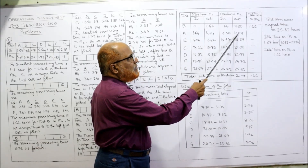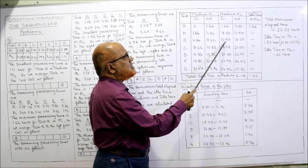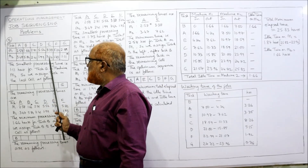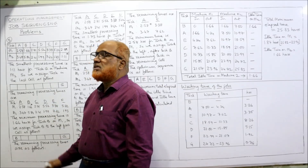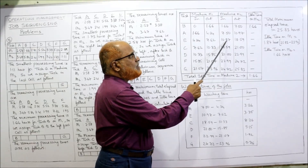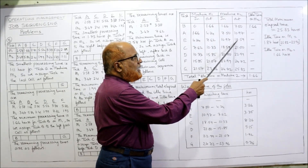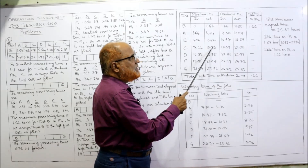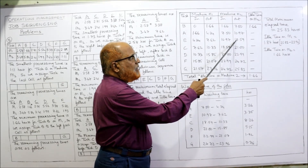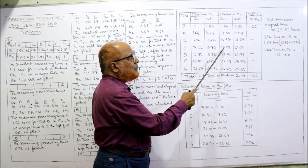Now 10.97 or 7.62 — whichever is higher, 10.97. So E starts on M2 at 10.97. Task E on M2 is 7.62, so 10.97 + 7.62 = 18.59. Compare 18.59 and 10.33 — 18.59 is higher, so the next job starts at 18.59.